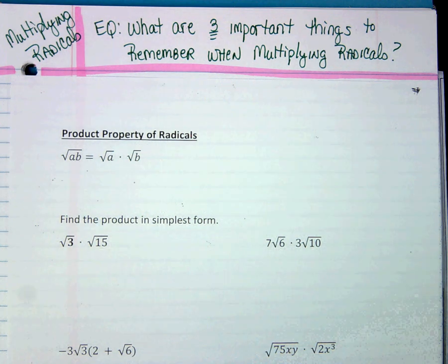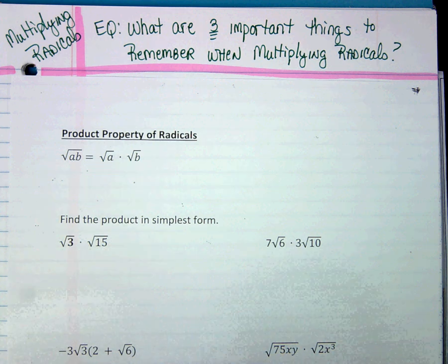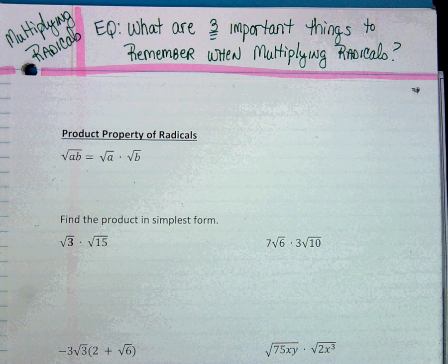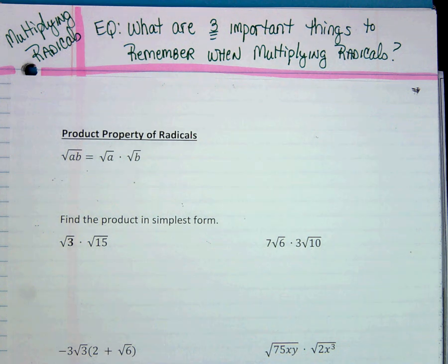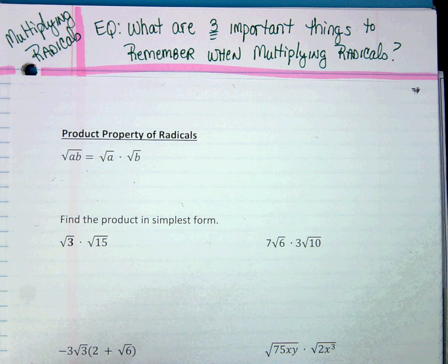In this lesson we're going to look at how to multiply radicals. Your essential question: what are three important things to remember when multiplying radicals? So I want you to think about how we do it and some things you have to check for.